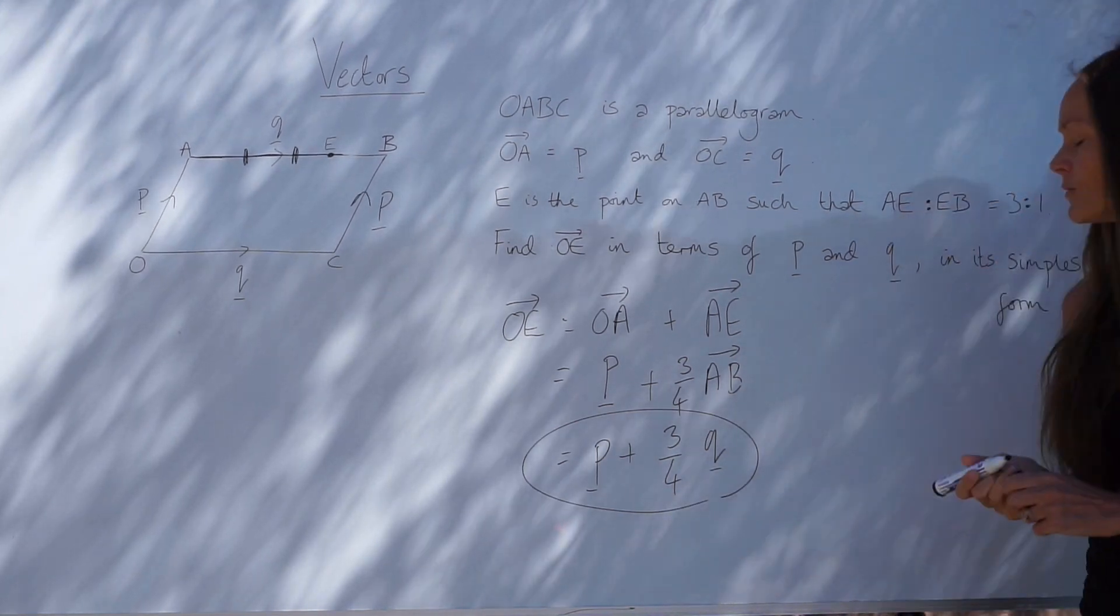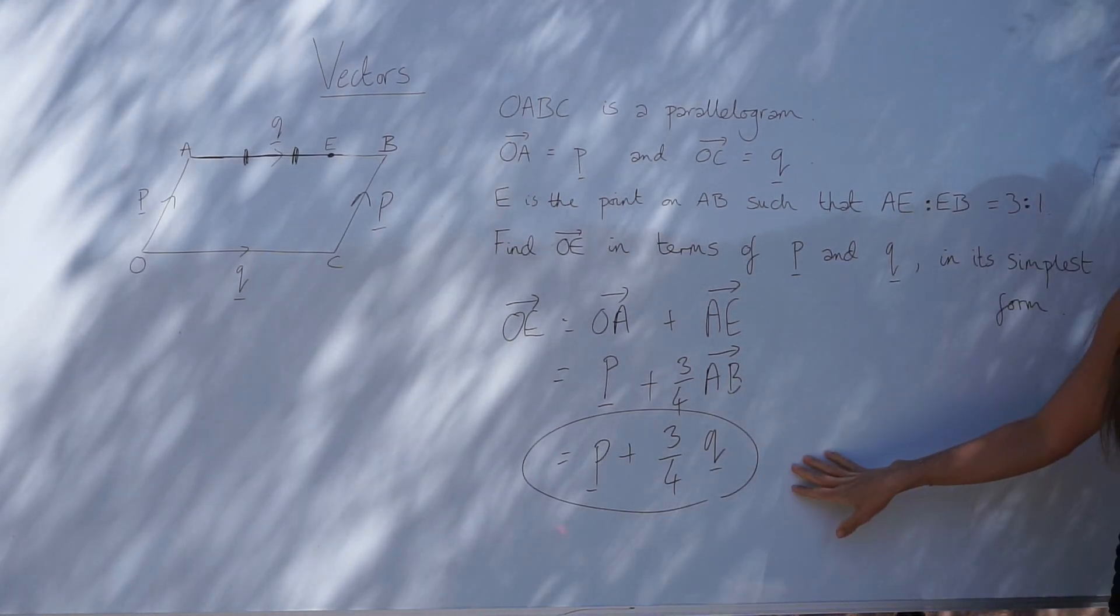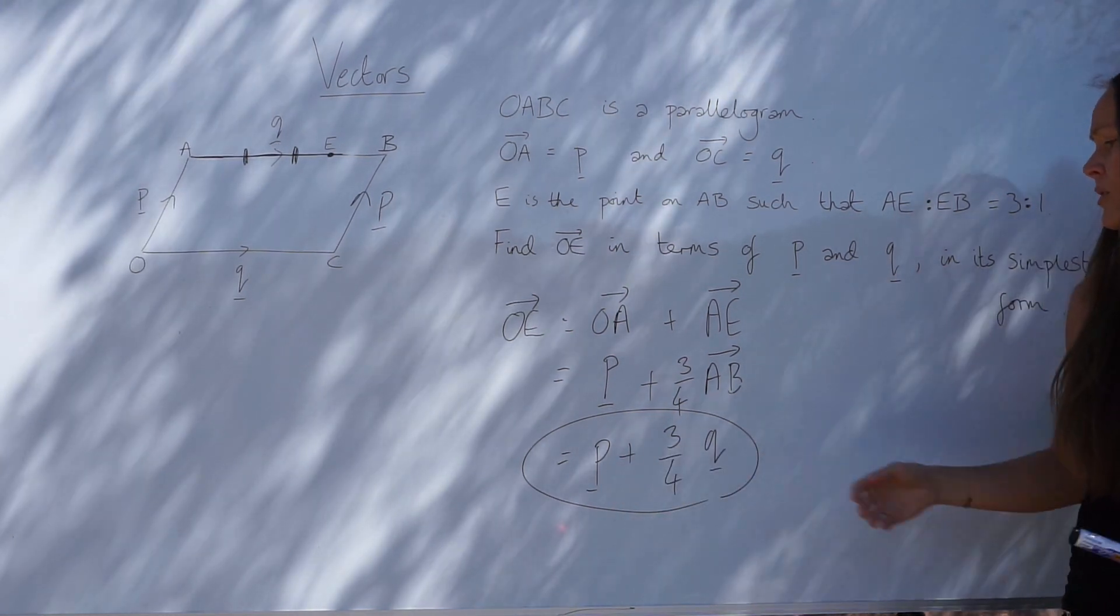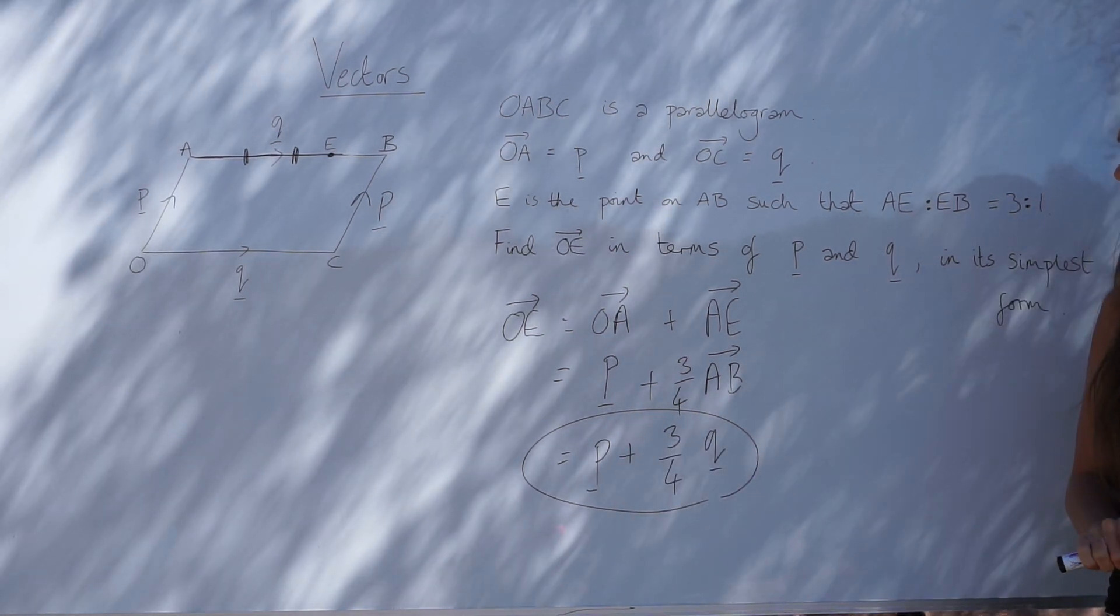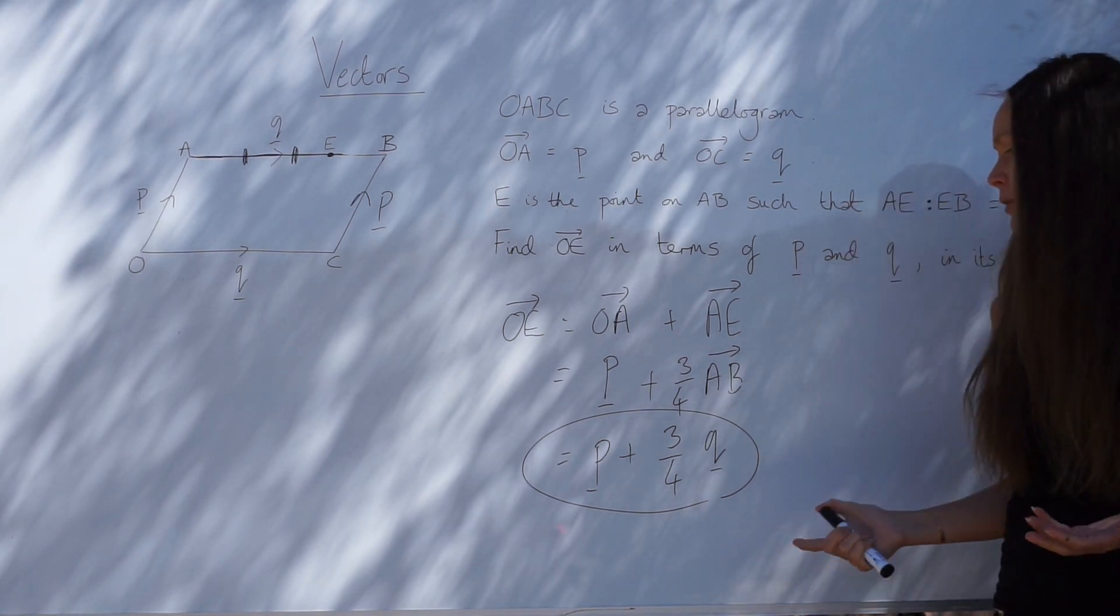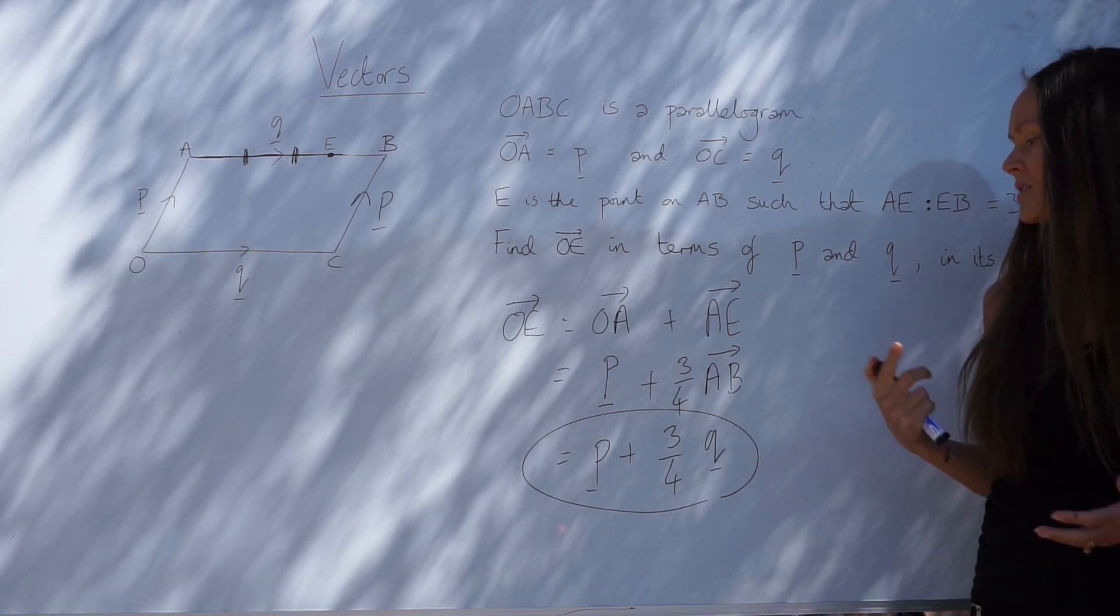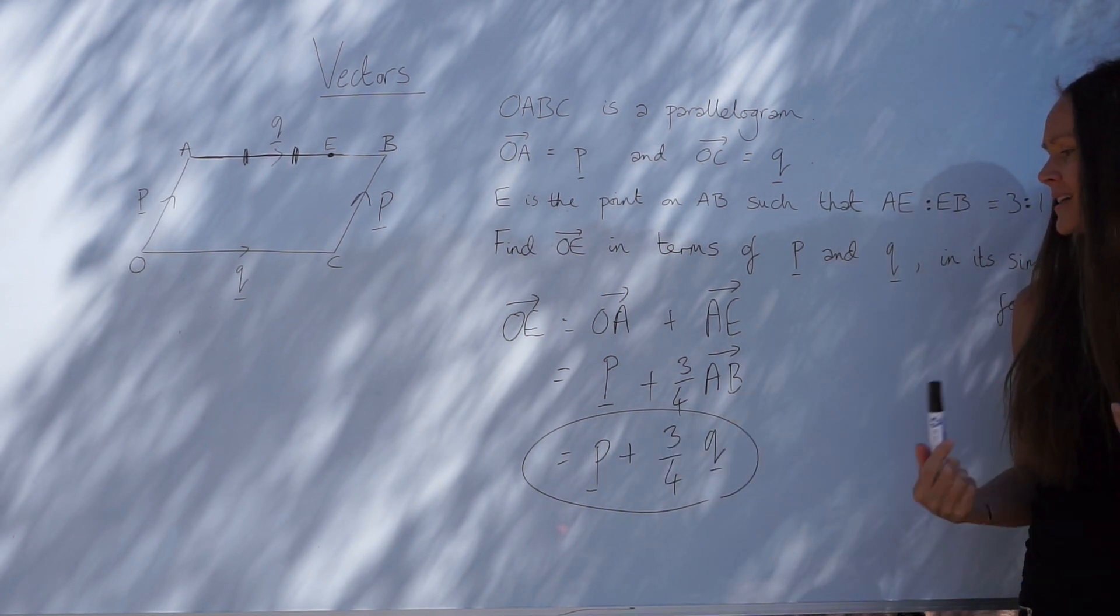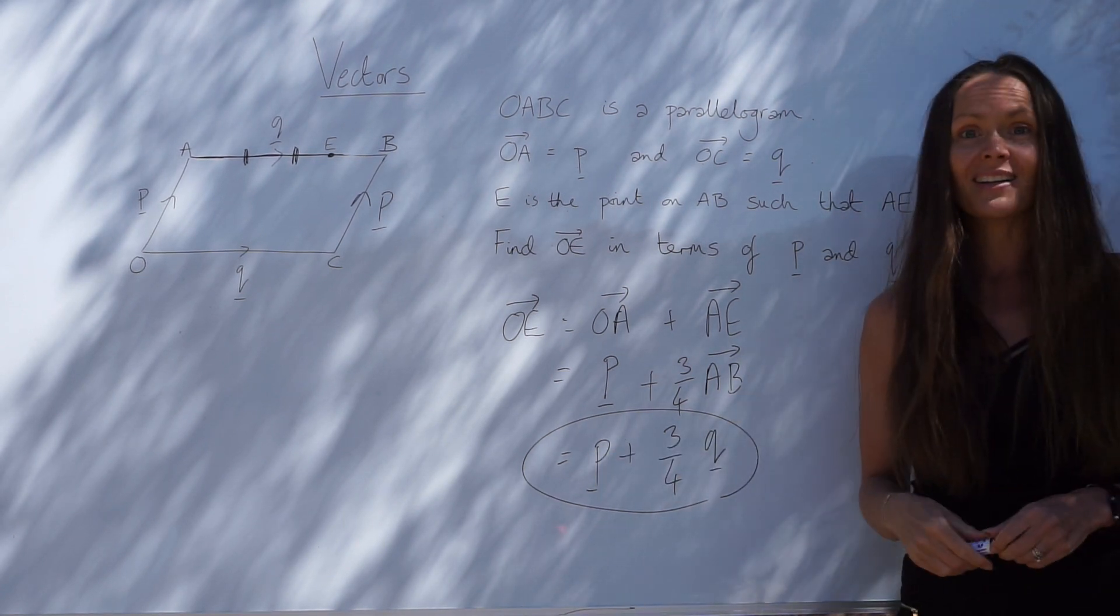So now it's with its vectors P and Q, and it's in its simplest form. We can't simplify that. There isn't another P term or another Q term. So that's the final answer. It would also be correct if you wrote three quarters Q plus P. As long as the signs are correct for the vectors and it's the same thing, that would be fine as well.